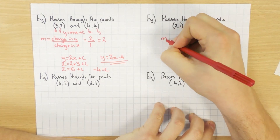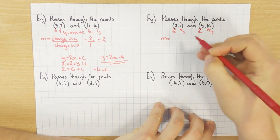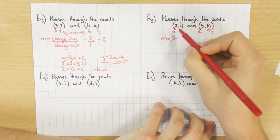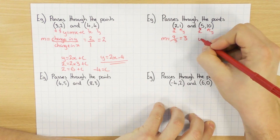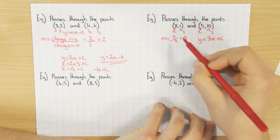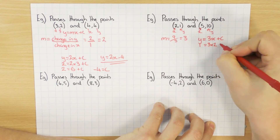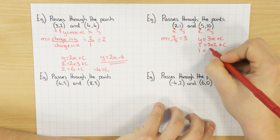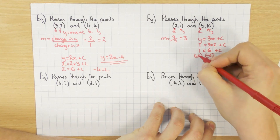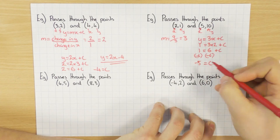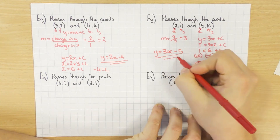Let's have a go at this one then — exactly the same thing. I'm going to work out the gradient first. What's the change in y? From 1 to 10, it's gone up 9. And the x from 2 to 5, the difference is 3. Simplify: 9 divided by 3 is 3, so the gradient here is 3. Substituting into the formula: y equals 3x plus c. I'm going to go with the coordinate (2, 1) because the numbers are smaller. So 1 equals 3 times 2 plus c, giving 1 equals 6 plus c. Subtracting 6 from both sides: minus 5 equals c. So y equals 3x minus 5.